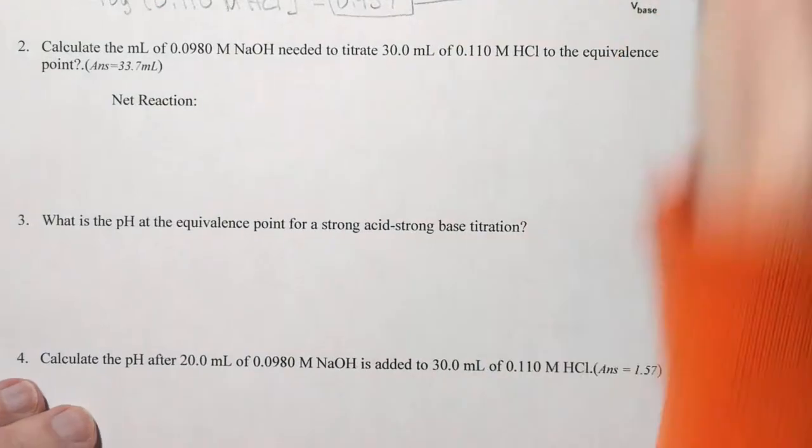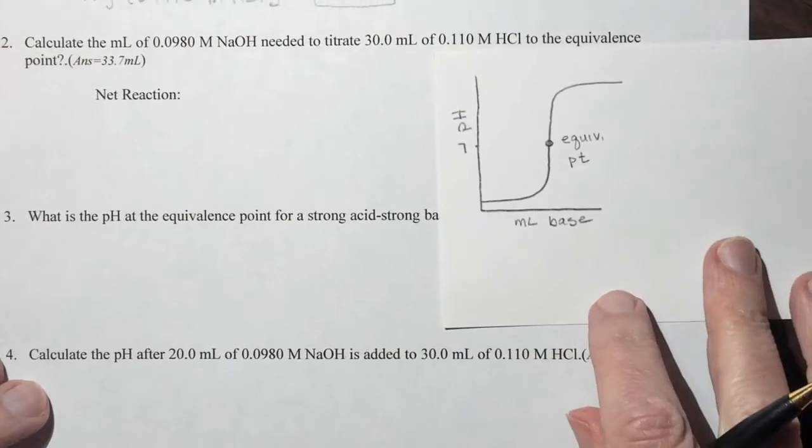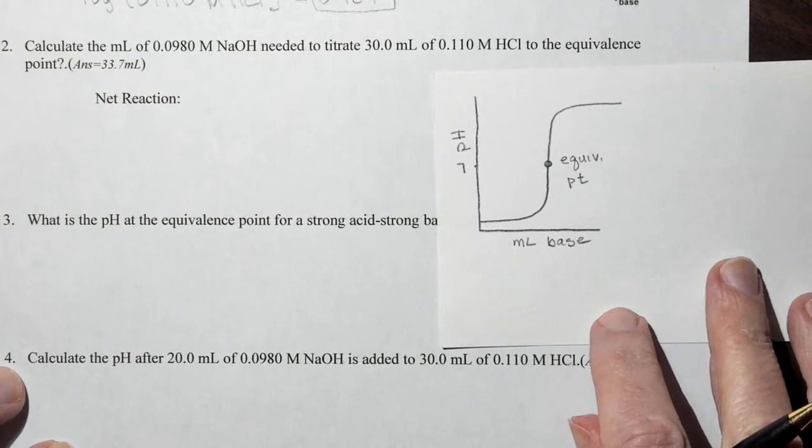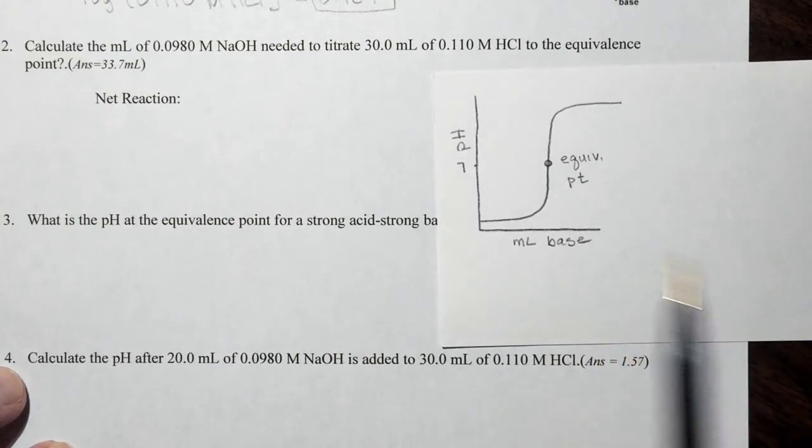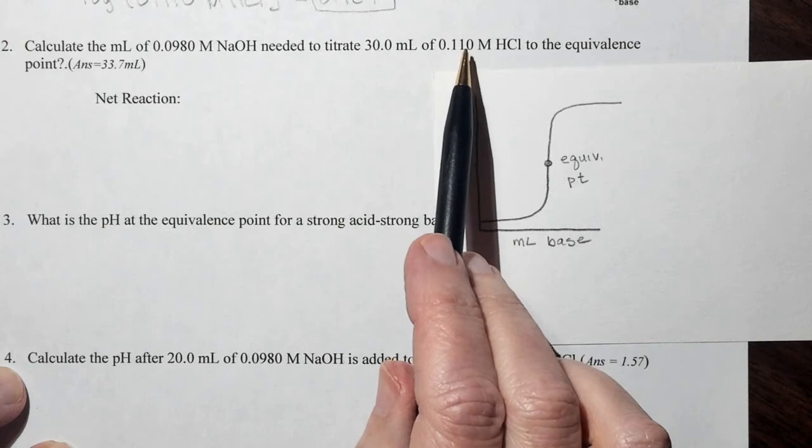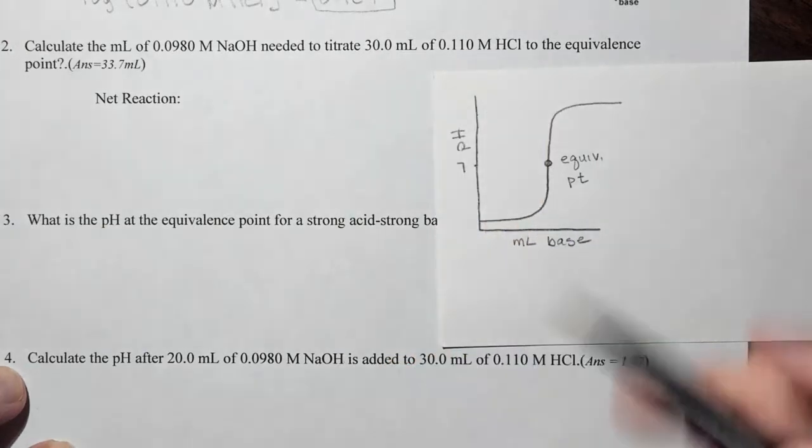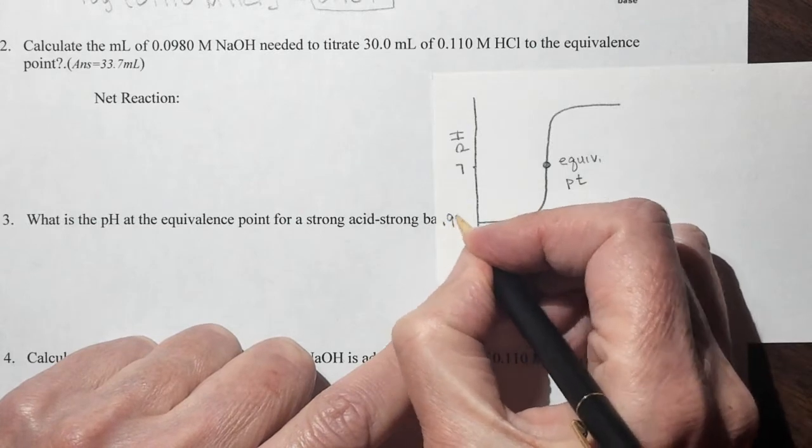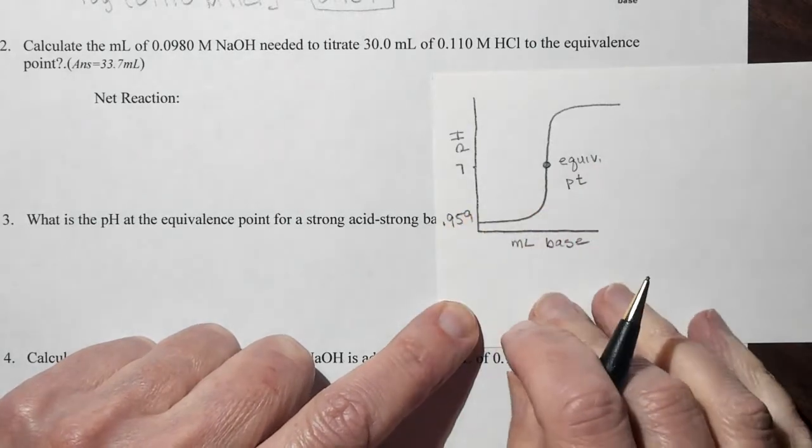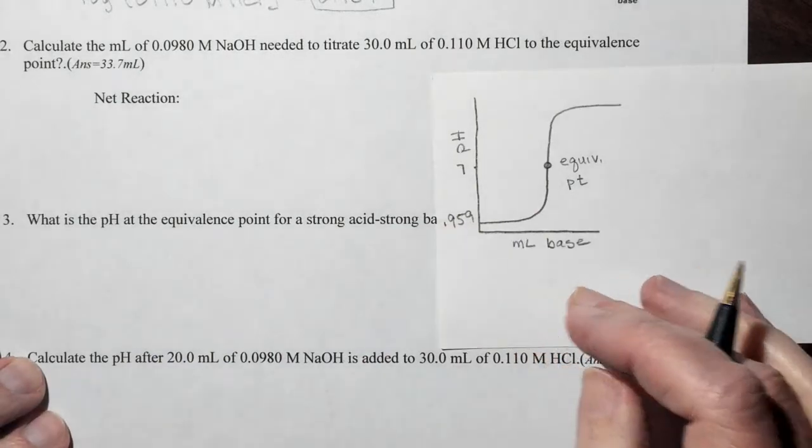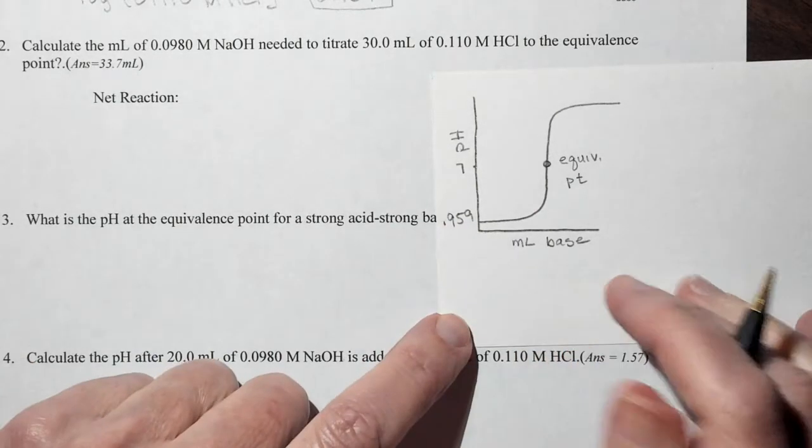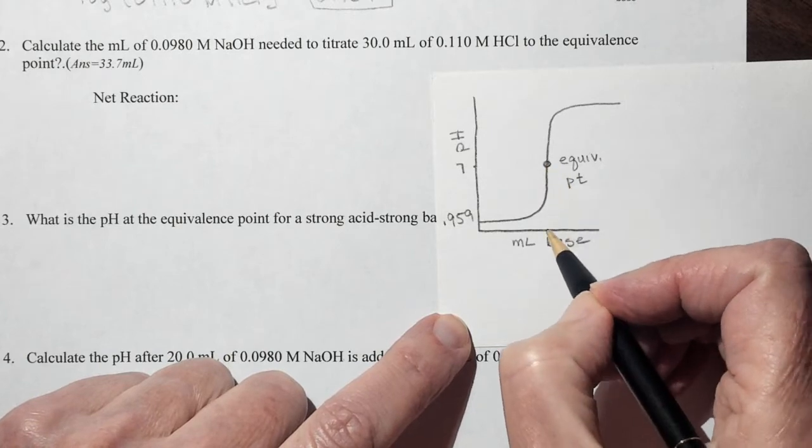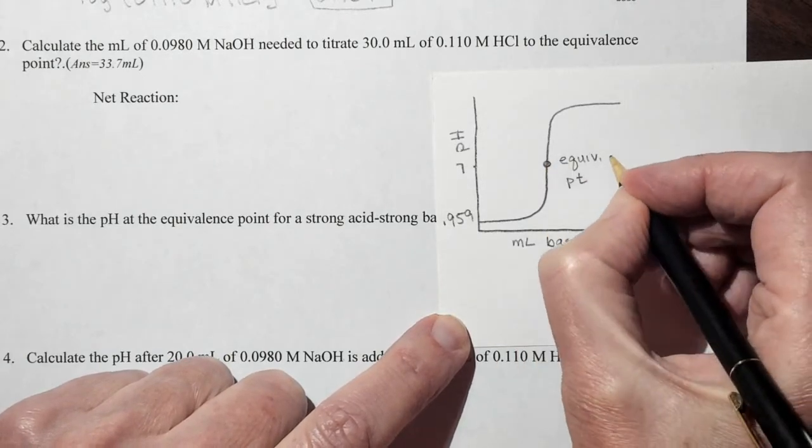The next question asks us to calculate the mLs of 0.0980 molar NaOH to titrate 30 mLs of 0.11 molar HCl to the equivalence point. Let's write down that we have figured out that this is 0.959 right here. That's our initial pH. And the equivalence point means what volume is required to get to right here. So we need to know how many mLs of base was required to get to the equivalence point.